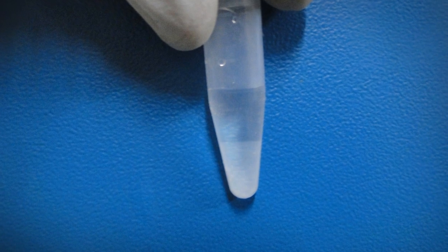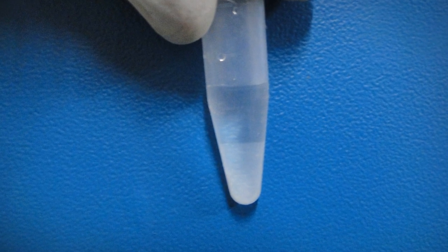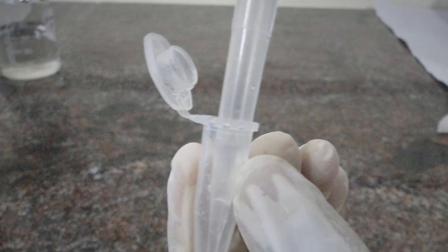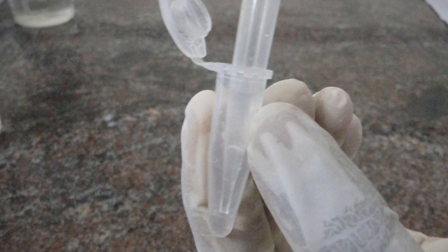We can observe two layers in the tube, a bottom organic and a top aqueous layer. Separate the aqueous layer to a fresh vial without disturbing the bottom layer.